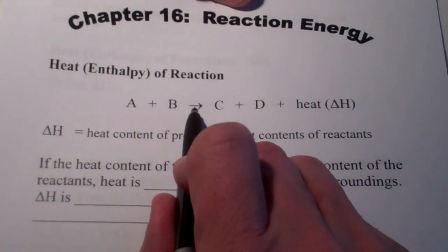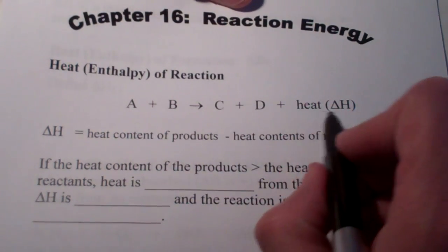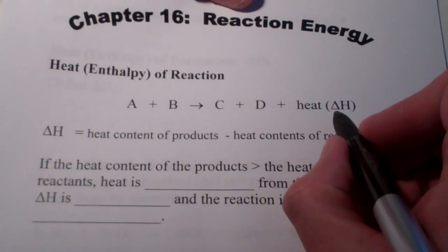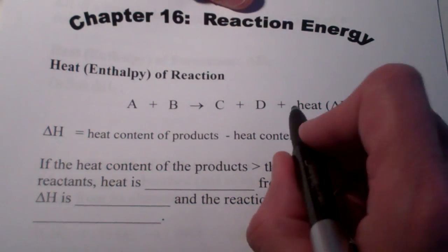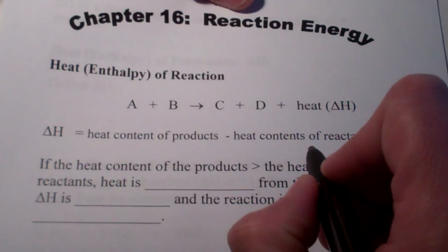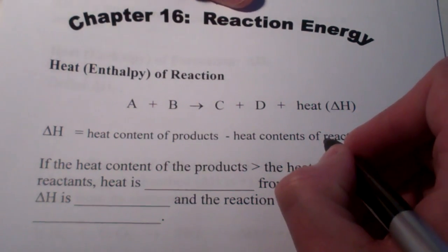A and B react to form C and D, plus heat. Now, heat will be symbolized by delta H. Remember our fireplace and the little girl that was going towards or away from the fire in a previous lecture? That delta H is the symbol for heat.